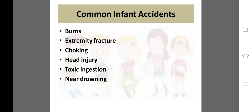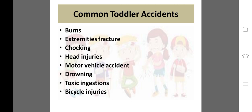Common infant accidents میں burns، extremity fractures، choking شامل ہیں۔ Choking کا مطلب ہے baby کو سانس لینے میں difficulty ہو اور wind pipe block ہو جائے۔ Toxic ingestion اور near drowning بھی infant میں common ہے۔ Common toddler accidents میں burns، extremity fractures، choking، head injury، motor vehicle accident — کیونکہ بچے bicycle use کرتے ہیں — drowning، اور toxic ingestion شامل ہیں۔